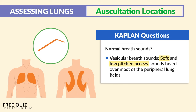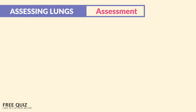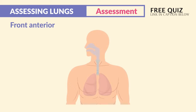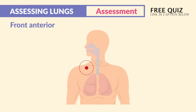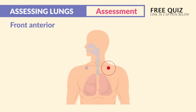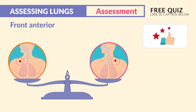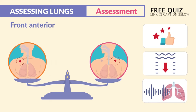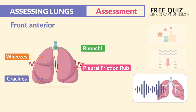For the anterior assessment, start at the top on the right side above the clavicle — above the collarbone — and listen for a full inhalation and full exhalation. Then move to the opposite side to compare the quality, depth, and any extra sounds. These extra sounds are called adventitious breath sounds.